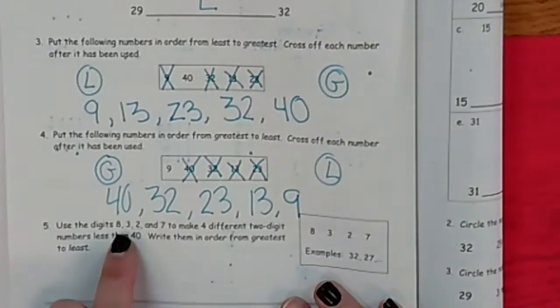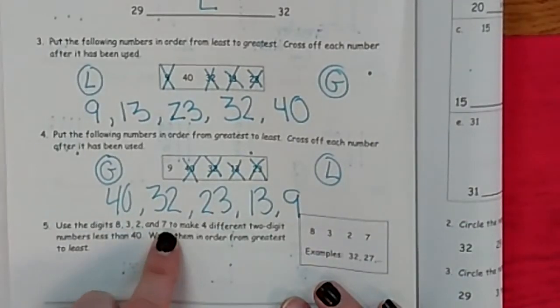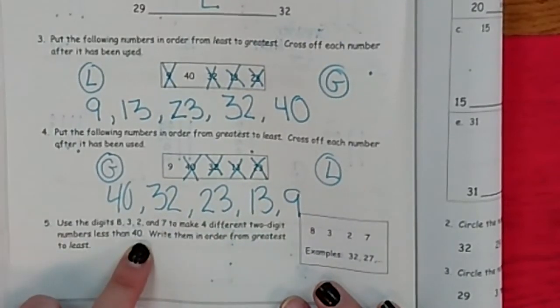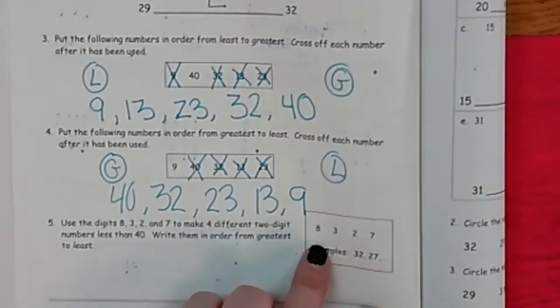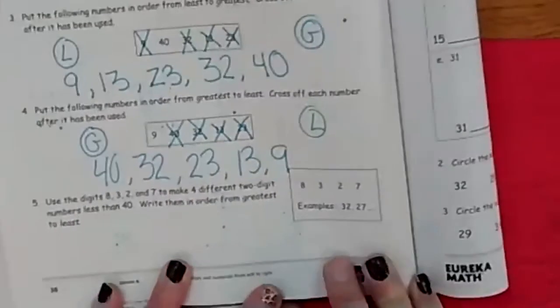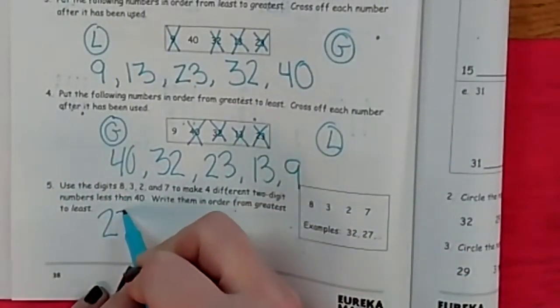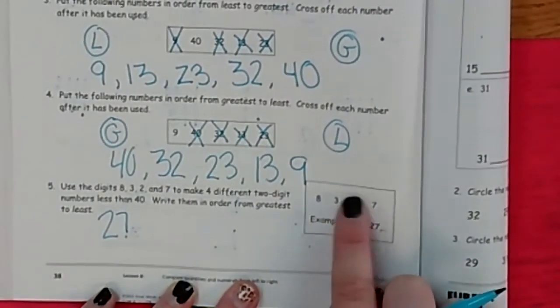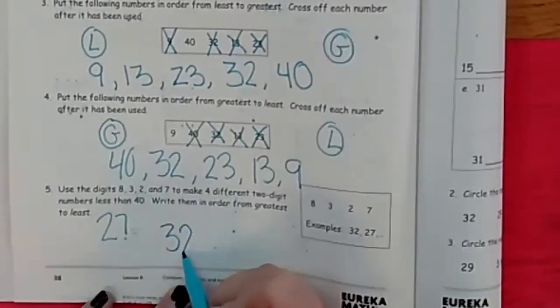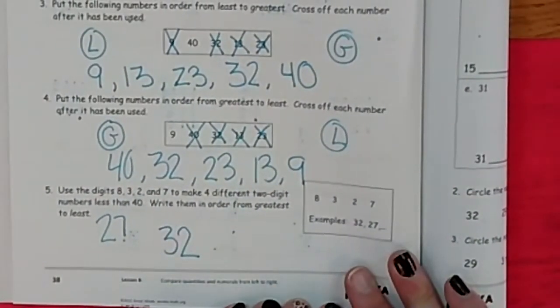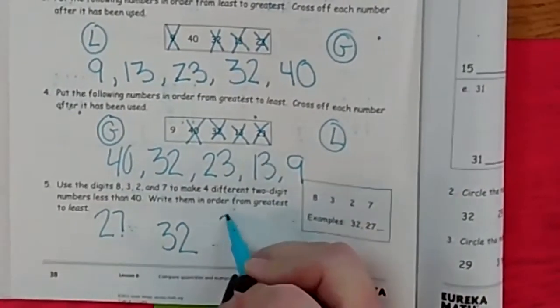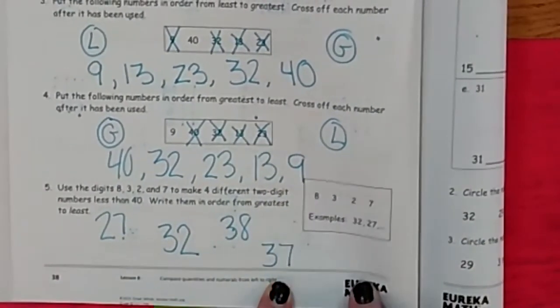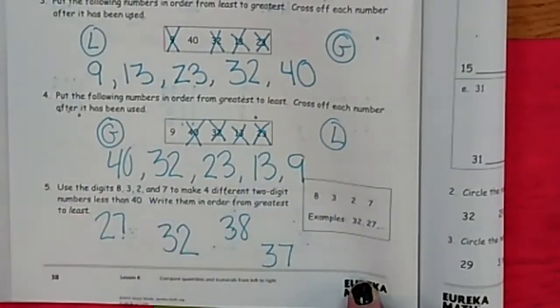All right. Now use these digits, 9, 3, 2, and 7, to make four different two digit numbers less than 40. Okay. So look over here and make me a number less than 40. I'll help you. Here's a number less than 40. 27. I think I put a 2 and a 7 together. How about we make another one? How about this number right here? Yeah. 32. Let's take another small number. Oh, I hear you. You're going to say 38. That's a good one. Well, what about this one? A 3 and a 7. Yep. 37. Did we get four of them? 1, 2, 3, 4. Check. We're done.